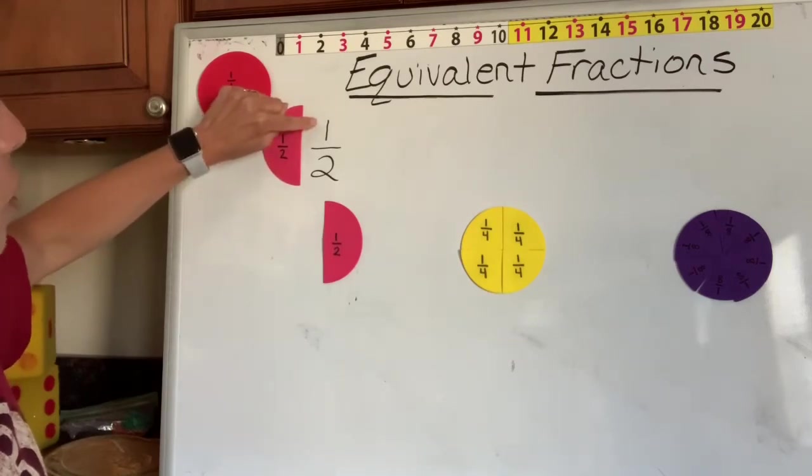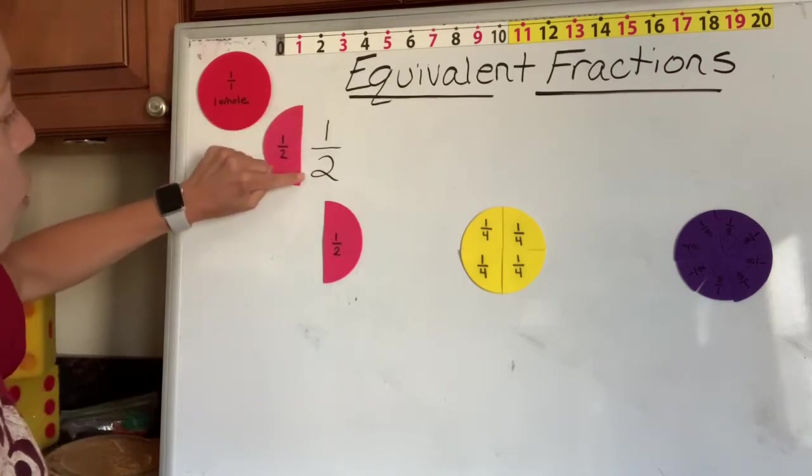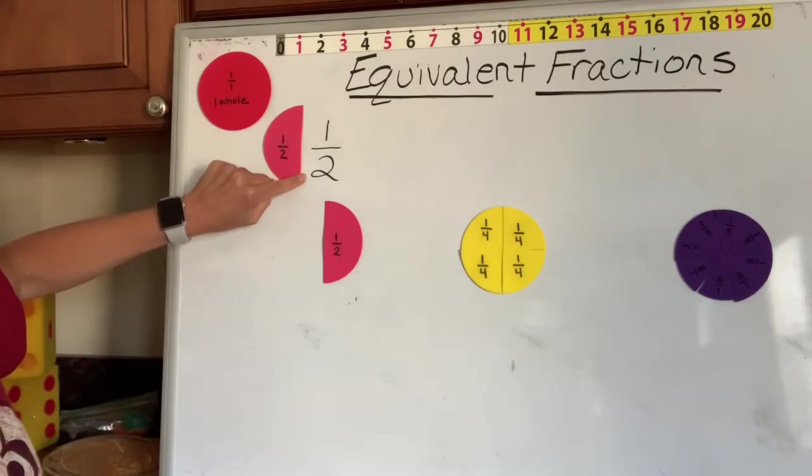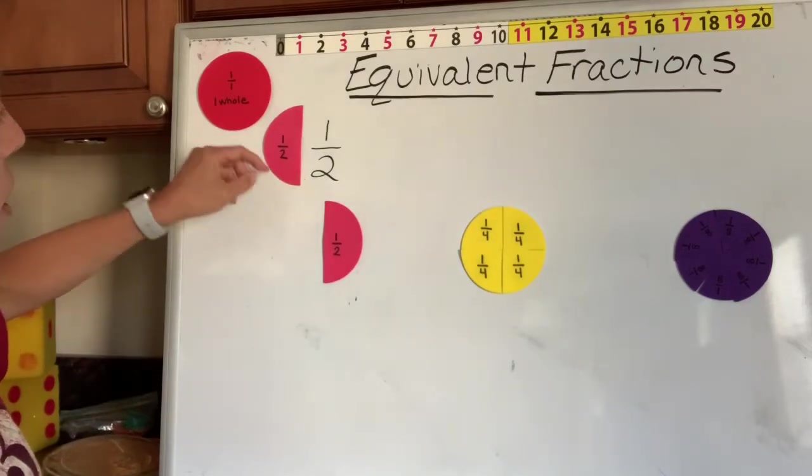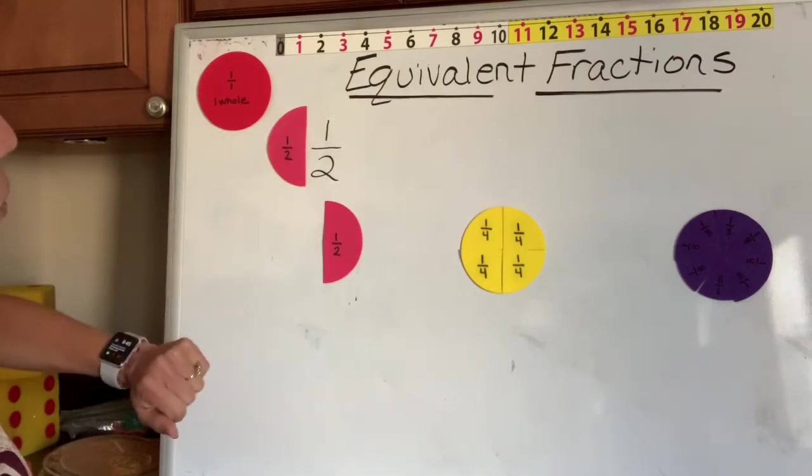One is your numerator. It tells you how many equal parts you have. Two is your denominator. It tells you the total amount of parts that the whole is divided into. So for one half, you have one out of two pieces.